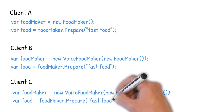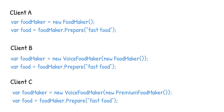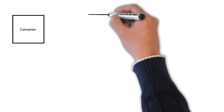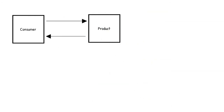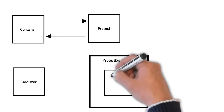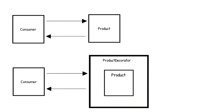From the block diagram: we have a consumer and a product — the consumer consumes the product in a regular way. Whenever there is a requirement to have some good-to-have functionality on top of this product — where the functionality is not the responsibility of the product but is demanded by the client — we create a decorator on top of the product. The decorator's job is to consume the product for its core functionality and then invoke its own logic to fulfill the client's demand.